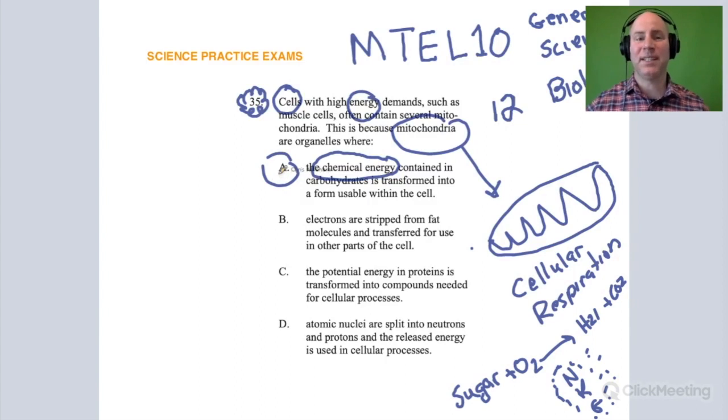Cellular respiration is being described in A. Hopefully you see that right away, so when it's talking about mitochondria, you automatically think cellular respiration. If you can see it right away, you'll be able to cross out B, C, and D very quickly.